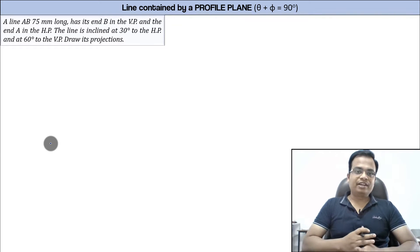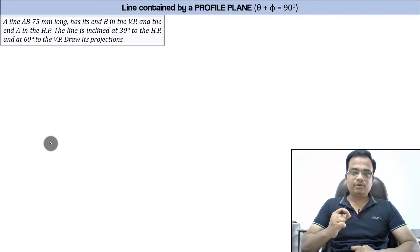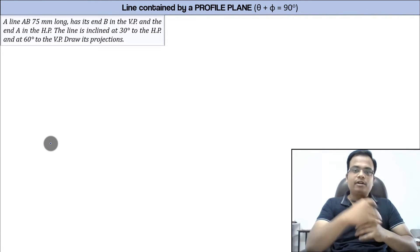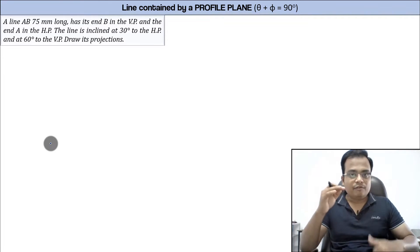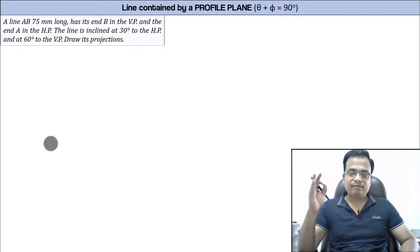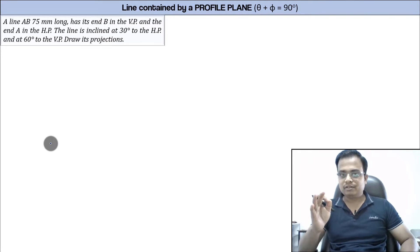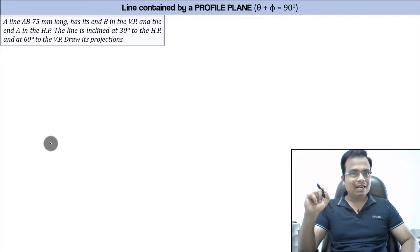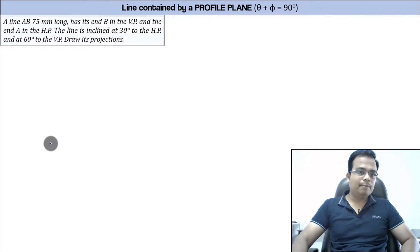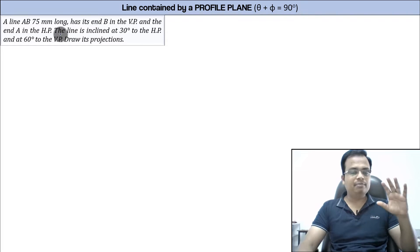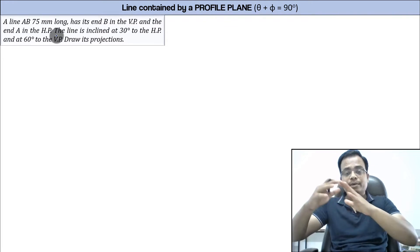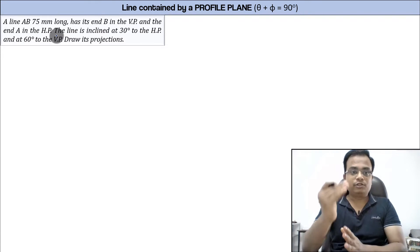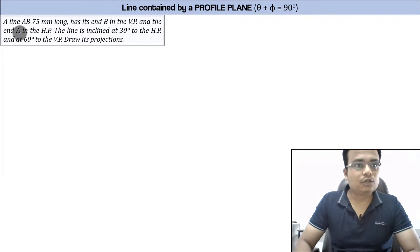Hi everyone, this is Manas, your friend and tutor. Today's video is going to be based purely on engineering drawing, and there is a very important case that I would like to discuss: when a line is contained by a profile plane. A profile plane is something which is perpendicular to both HP and VP. First, let us read this problem and then I'll give you a three-dimensional demonstration, and then we'll make its 2D version.